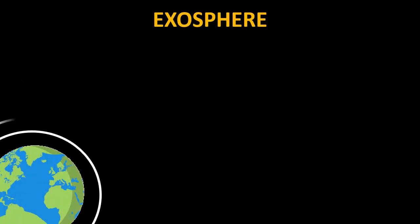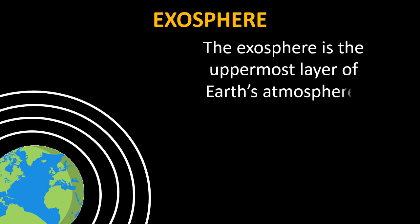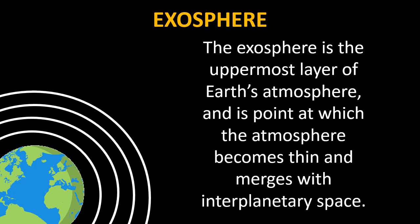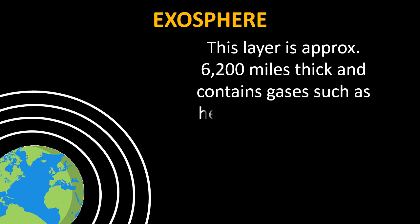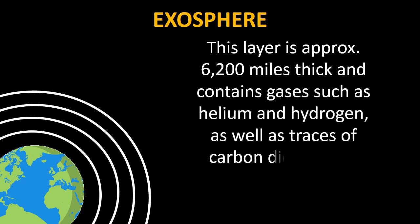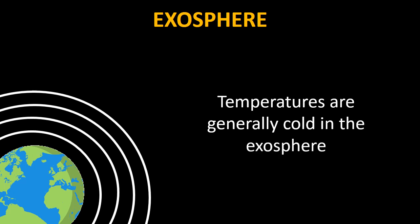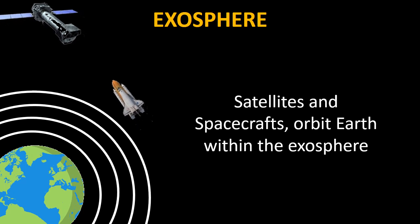The final layer is called the exosphere. The exosphere is the uppermost layer of the earth's atmosphere and the point at which the atmosphere becomes thin and merges with interplanetary space. This layer is approximately 6,200 miles thick and contains gases such as helium and hydrogen, as well as traces of carbon dioxide and oxygen. Temperatures are generally cold in the exosphere. Satellites and spacecraft orbit Earth within the exosphere.